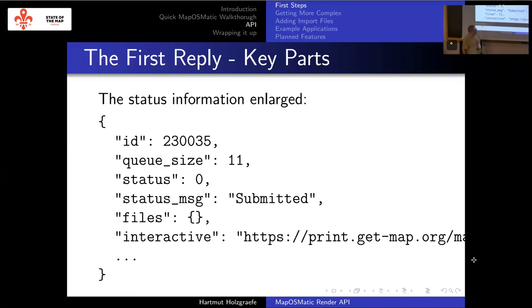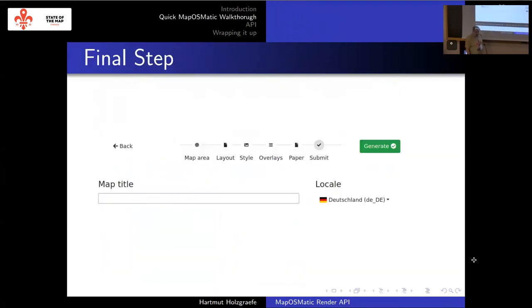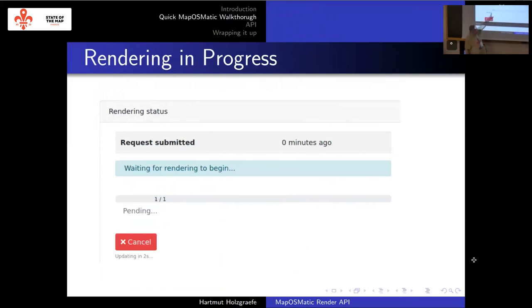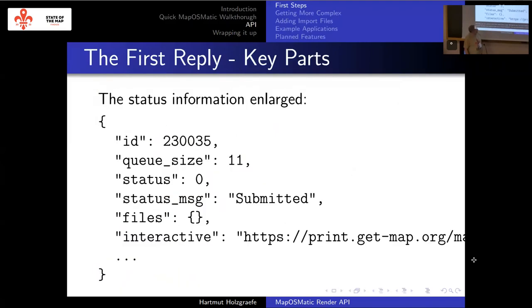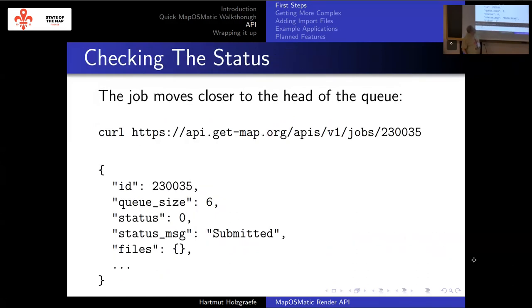The response also gives you an interactive feedback URL that basically redirects you to the same status page. So if you have software that files a render request but just wants to give visual feedback, you redirect the browser to that page and you're done. But if you want a program to process the response, you can submit GET requests to the same API giving it the render request number. You basically get the same status block again — here we're now at position number six in the rendering queue. You can call this once every minute to see how it progresses.